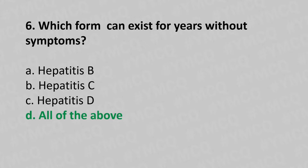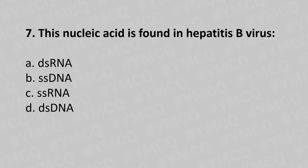Now let's move to question number 7. This nucleic acid is found in hepatitis B virus. Option A, dsRNA. Option B, ssDNA. Option C, ssRNA. Option D, dsDNA. And the answer is... Option D, dsDNA.